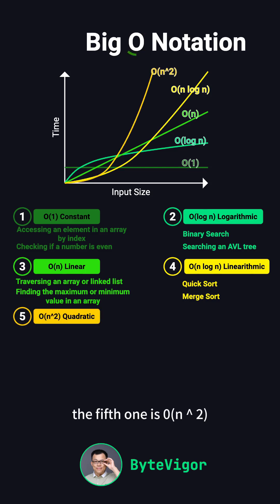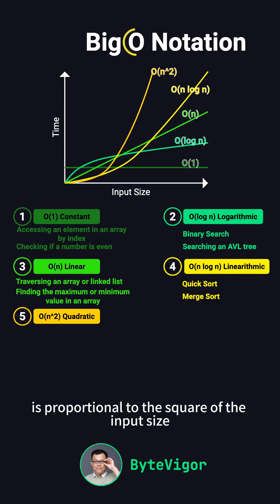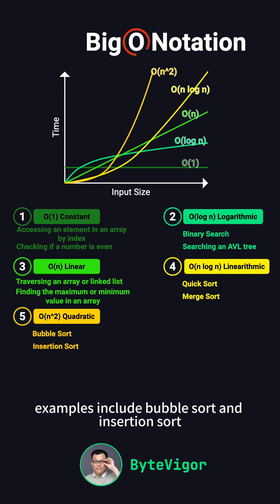The fifth one is O(n²), also called quadratic time complexity. This means the execution time is proportional to the square of the input size, and it's common in algorithms with nested loops. Examples include bubble sort and insertion sort.